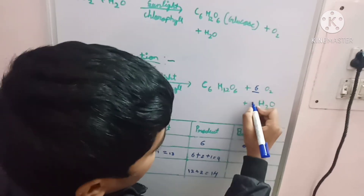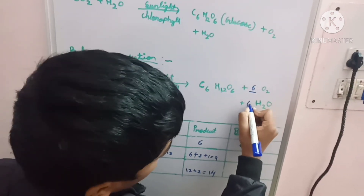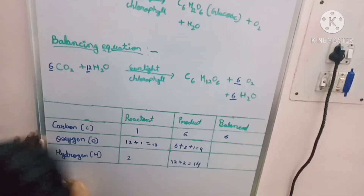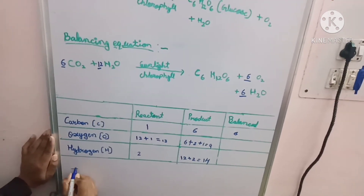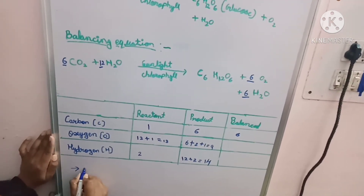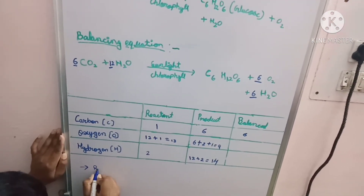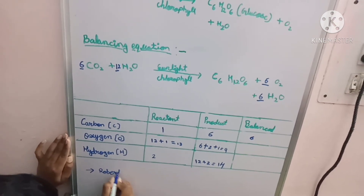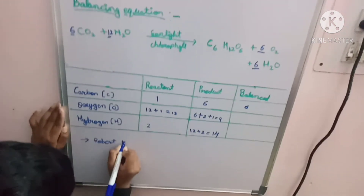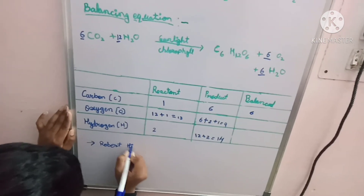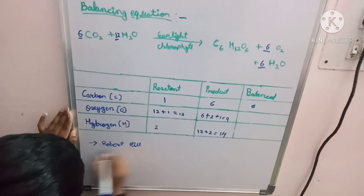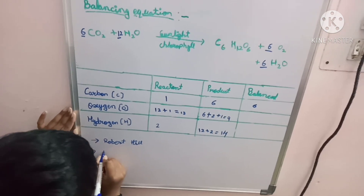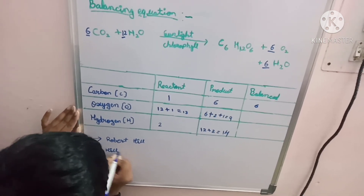This equation was found by Robert Hill and is also known as the Hill reaction.